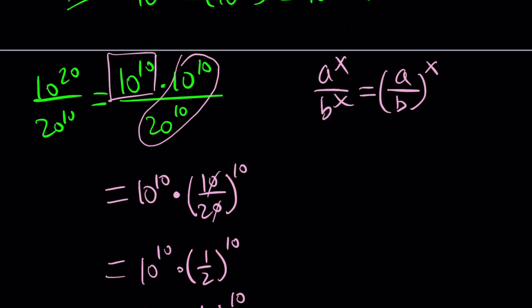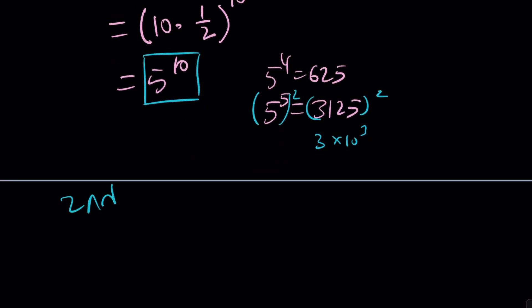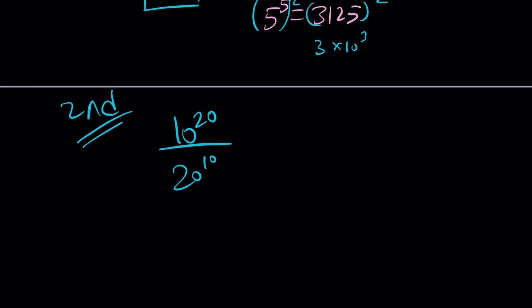And this is the first method. Now let's go ahead and take a look at the second method. The second method uses the bases. So, since we can split up 20 into 2 times 10, and we have a rule that says, if you have a times b to the power x, you can write it as a to the x times b to the x.